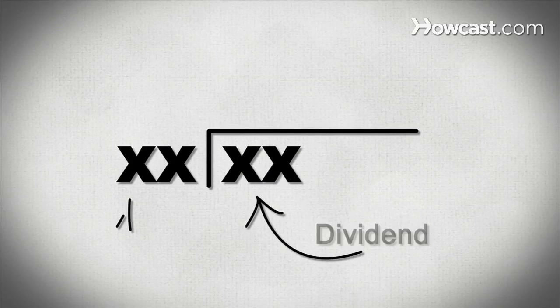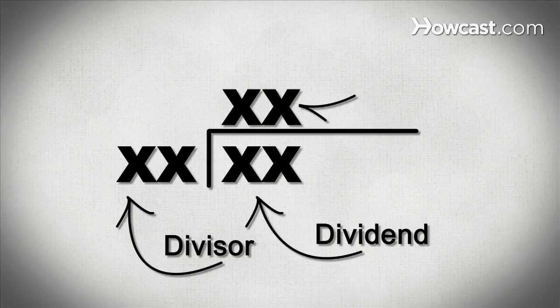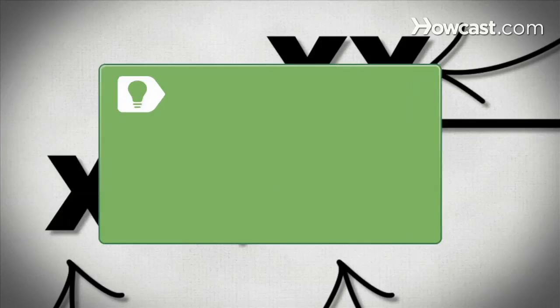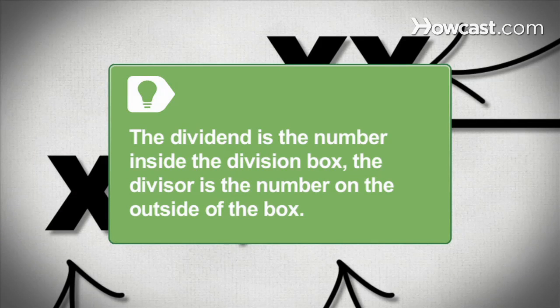Step 1. Recognize that when you have long division problems, you must divide a dividend by a divisor to obtain the answer, called a quotient. The dividend is the number inside the division box. The divisor is the number on the outside of the box.